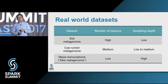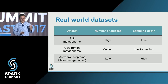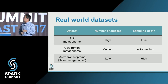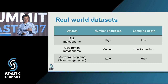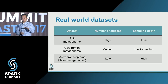We then decided to use real-world metagenome datasets. We picked three different types: a soil metagenome dataset with a large number of species but low sequencing depth per species; a cow rumen metagenome dataset with about 6,000 species and low-to-medium sequencing depth; and a transcriptome dataset — used to emulate a scenario with fewer species but much higher sampling depth — just to see Spark's performance on different types of data.